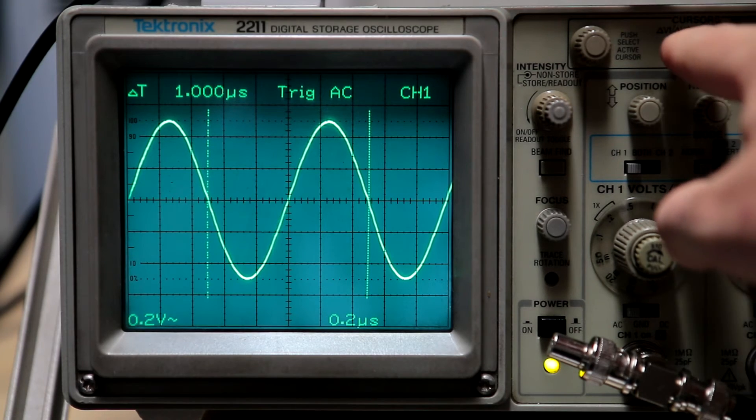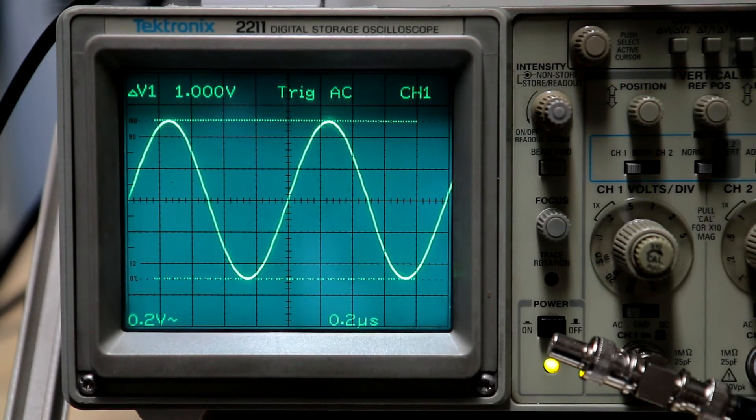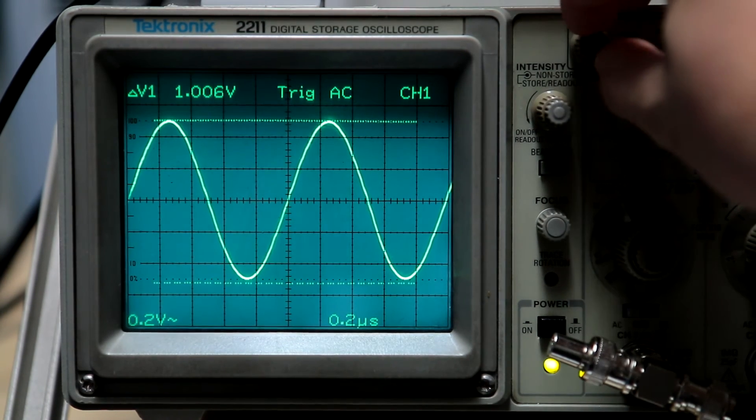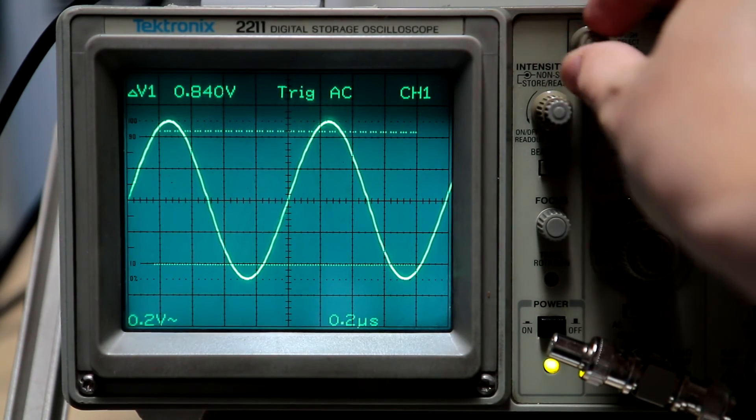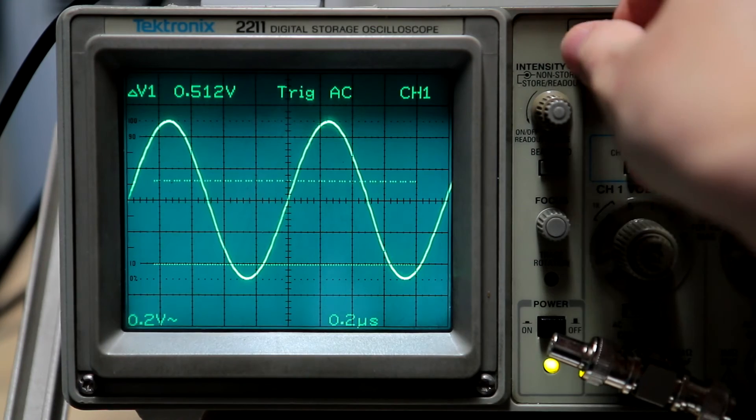Same for the vertical scale, 1 volt peak to peak bang on. You control it via this knob and if you want to do the other one you press it and then you can do the other one. Quite handy that.